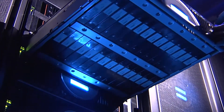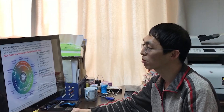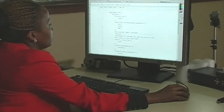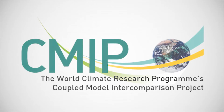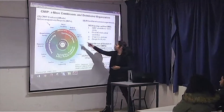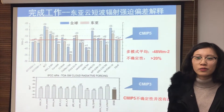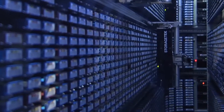The World Climate Research Program organizes an intercomparison project so that scientists can share and compare their models. We call this CMIP, the Coupled Model Intercomparison Project. It involves more than 30 groups around the world, more than a thousand researchers, and probably produces on the order of 20 to 40 petabytes.